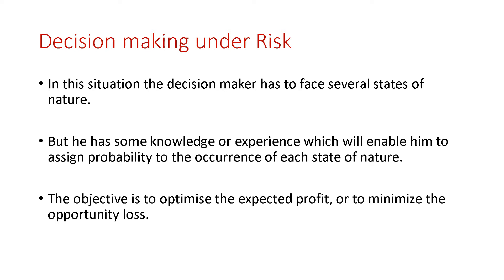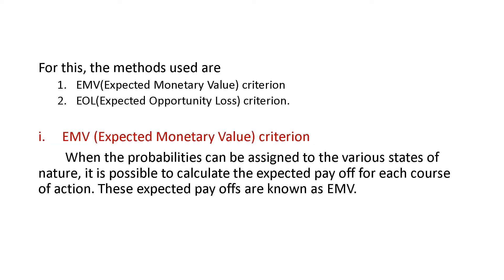The objective is to optimize the expected profit or to minimize the opportunity loss. Decision making under risk has two methods: EMV and EOL. EMV means Expected Monetary Value criterion and EOL is Expected Opportunity Loss criterion.